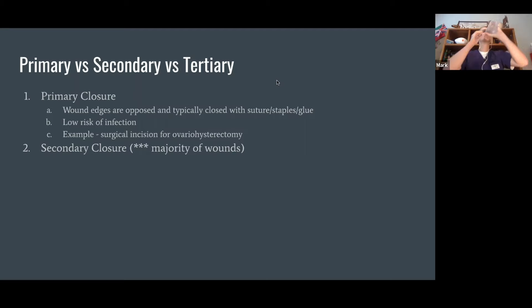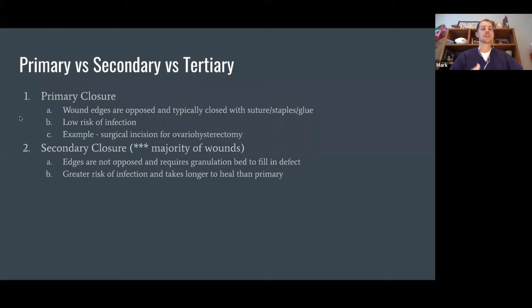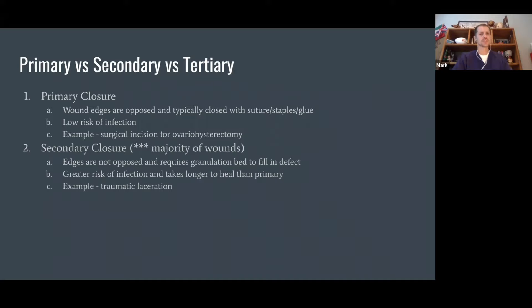What we're going to talk about most today is secondary closure, which is going to be the majority of your wounds. Most of your wounds are going to have a defect so big that you can't close the skin edges back together — it's actually going to require granulation, that bright pink tissue, to fill in the defect. There's typically a greater risk of infection, and it's going to take longer than primary closure, because we have to wait on that granulation tissue to fill the defect and slowly move toward the surface edge. The most common examples are traumatic lacerations, dog fights, or lacerations from metal or wood.